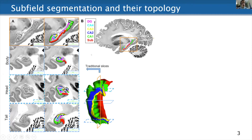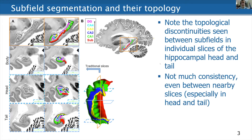One thing I want to point out is that between the different subfields, there is always a consistent relationship. However, sometimes when we sample this coronally, these subfields are very much out of plane, and so we end up getting discontinuities in any given slice. This can be quite challenging, and since a lot of people are interested in this problem, it's generated a bit of confusion in the literature on hippocampal subfields. This is especially problematic in the head and tail.